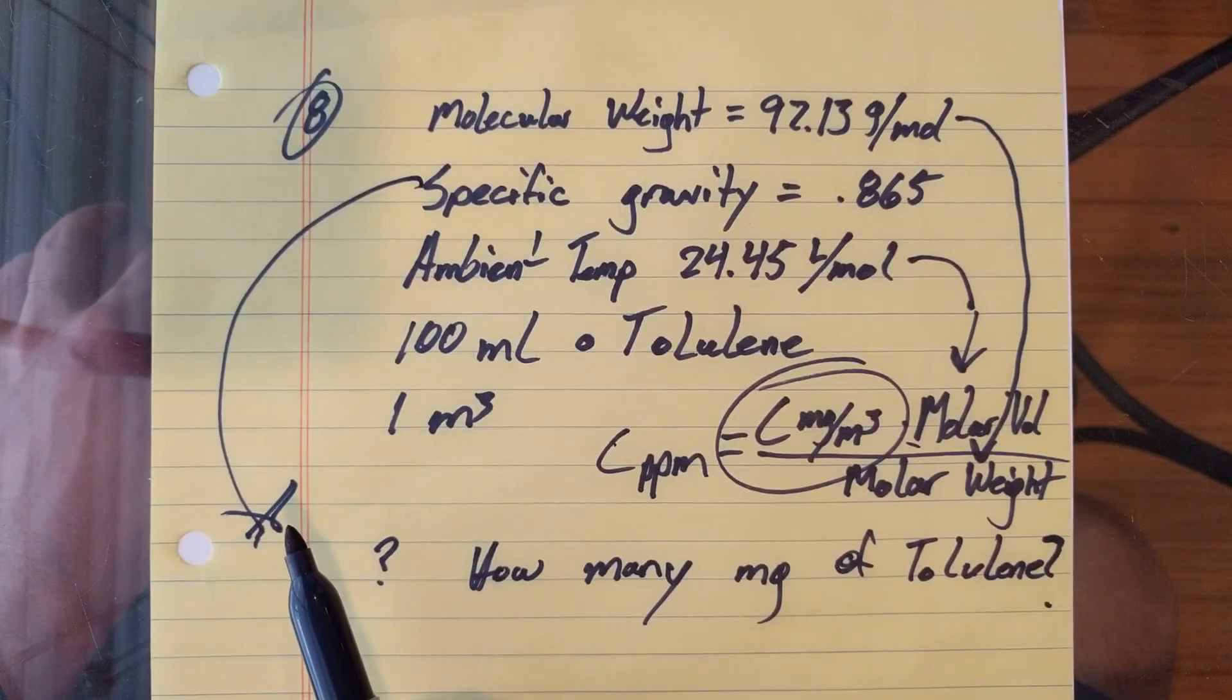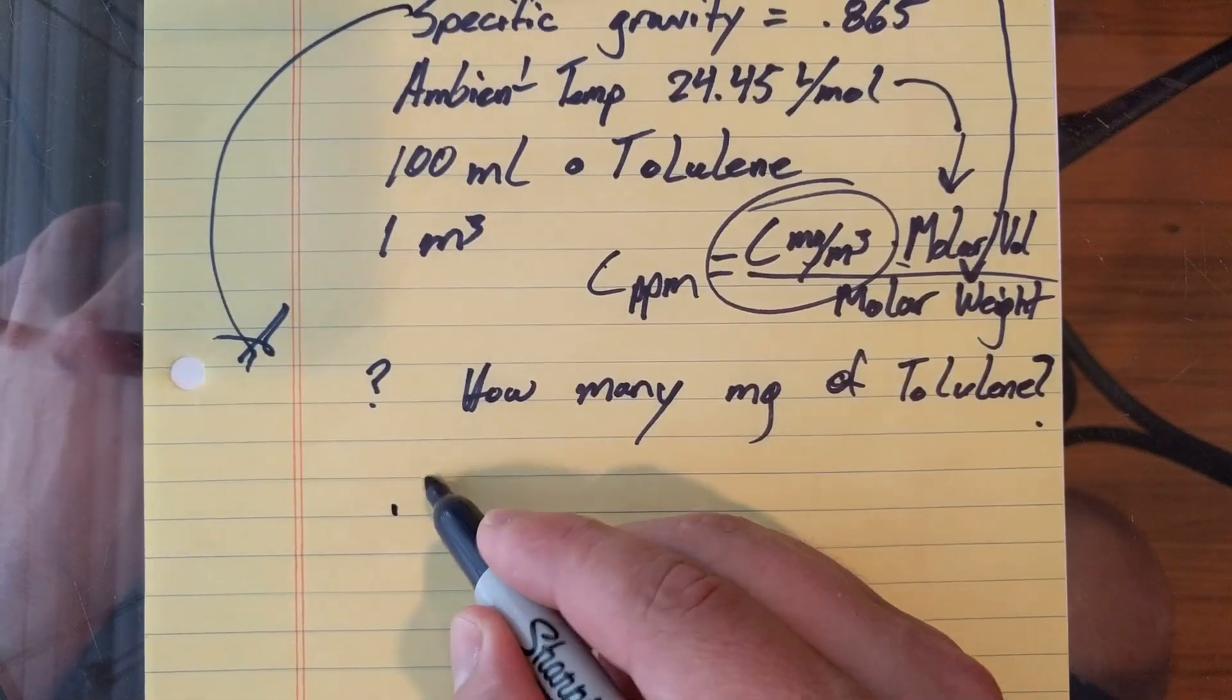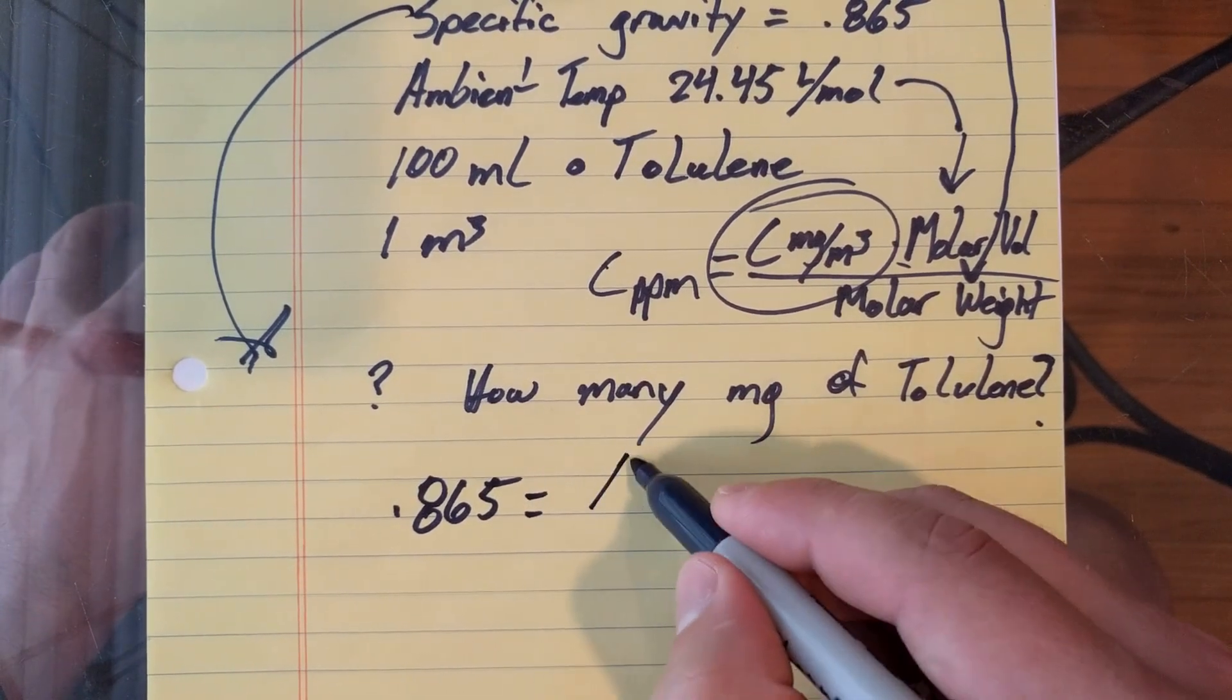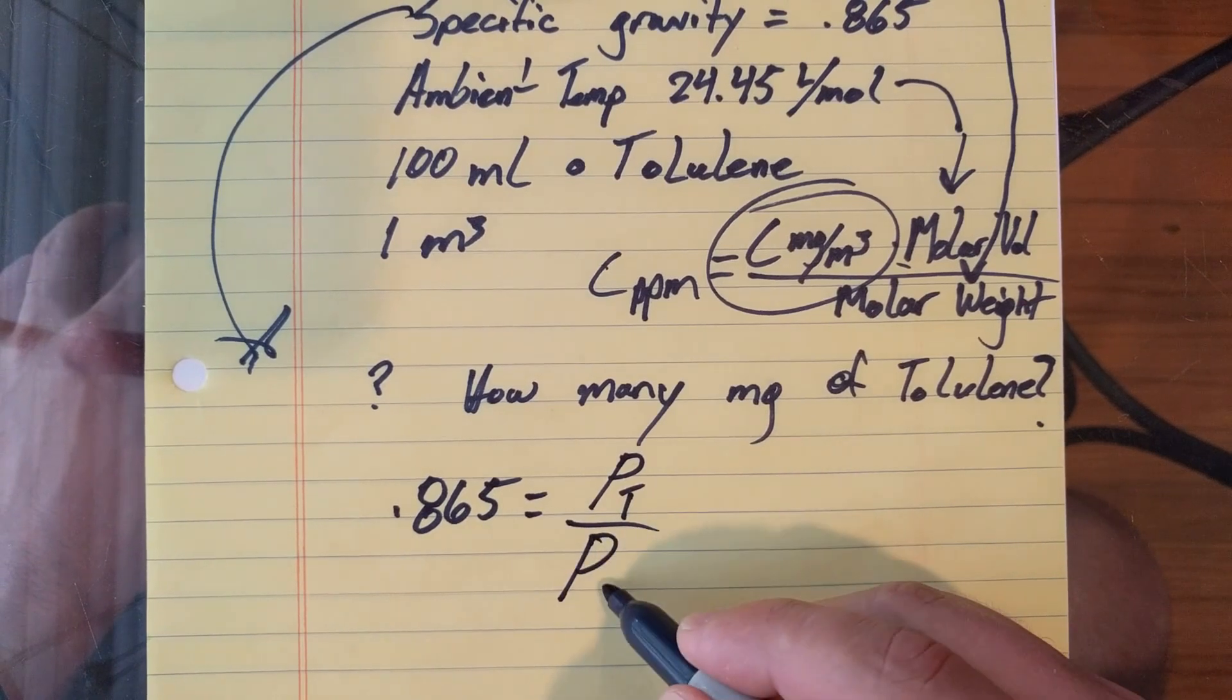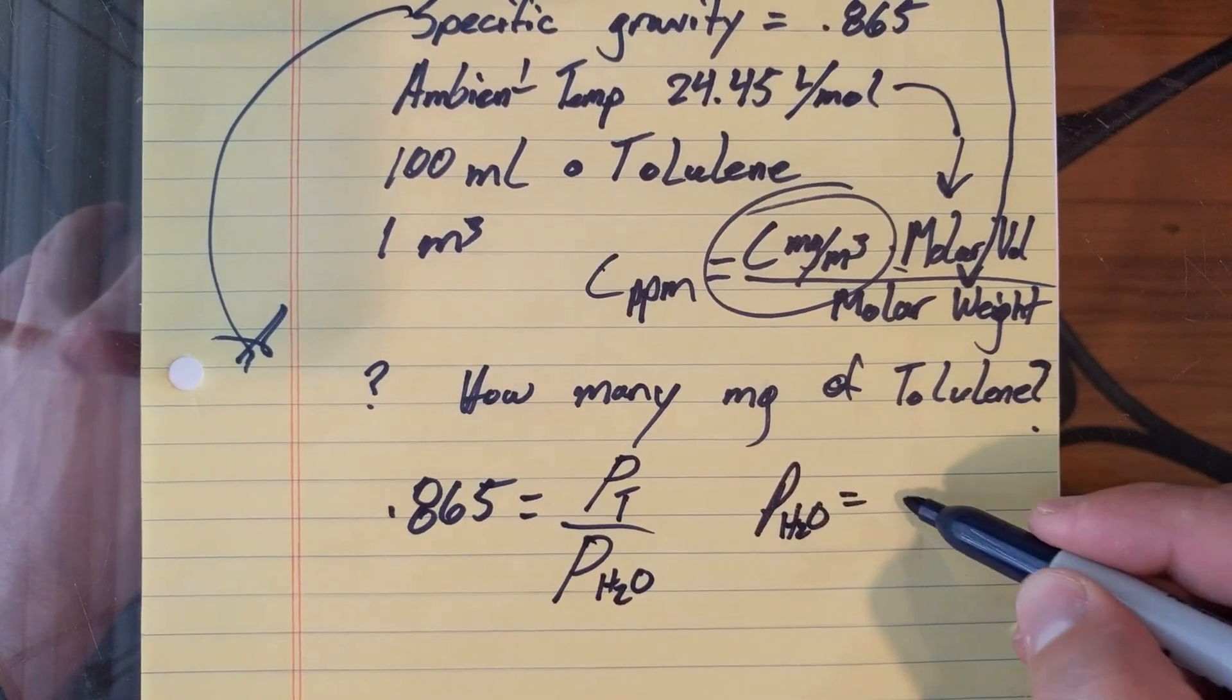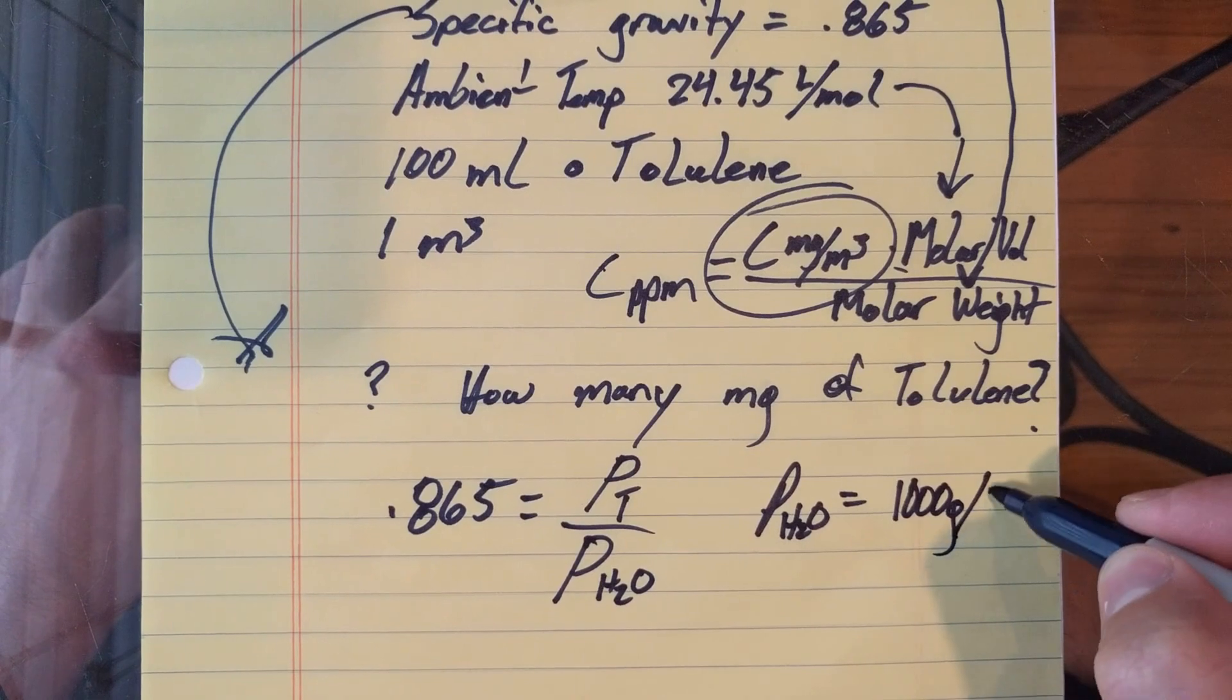For instance, this 0.865, the specific gravity equation, is equal to the density of toluene divided by the density of H2O. And the density of H2O is equal to 1,000 grams per liter.